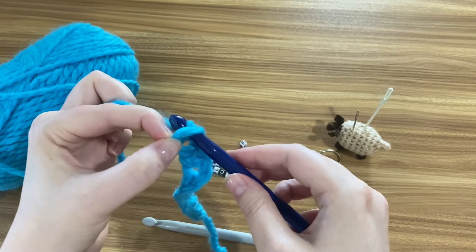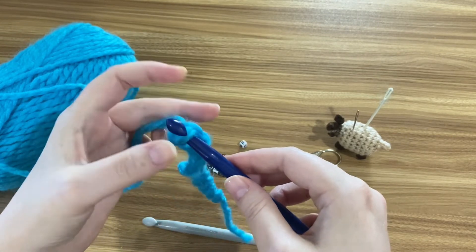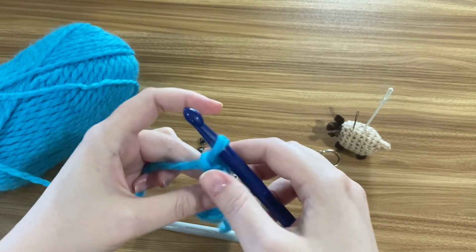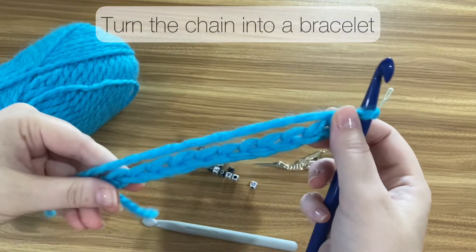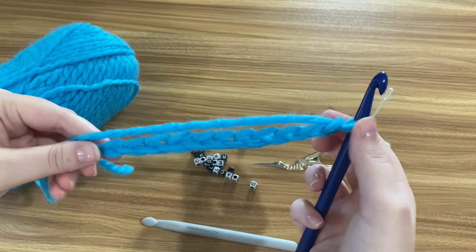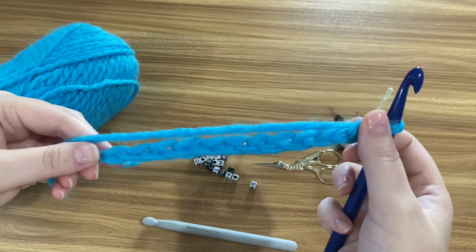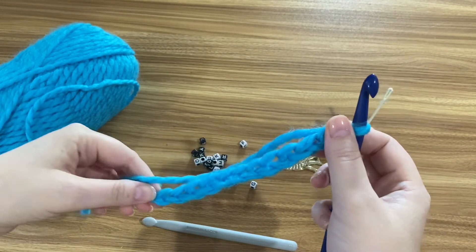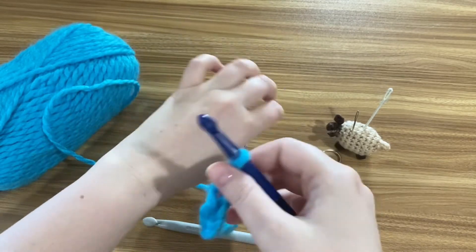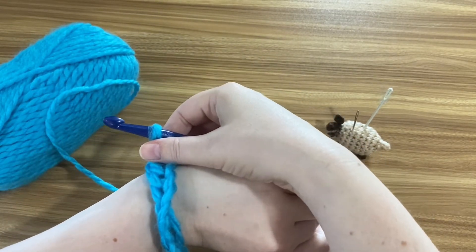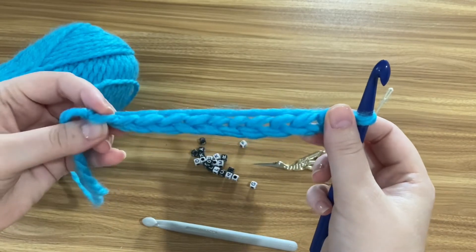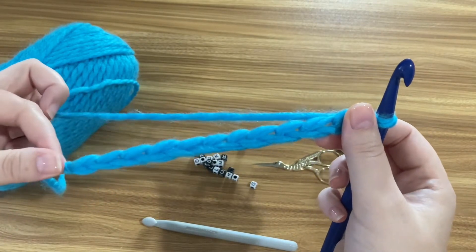Step four is to turn this chain into a bracelet. Check that it's long enough. Wrap it around the wrist to check it will fit over their hand but not be too loose on their wrist. I'm not going to manage to wrap it around my own wrist. It's not long enough and I'm not that coordinated, but after making loads of these earlier today I know this would fit my nine-year-old.